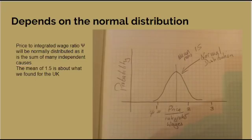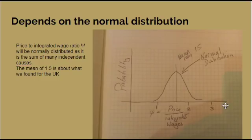They argue that in a chaotic system like the capitalist economy, the ratio of price to integrated wages will be normally distributed — it will fall on a bell curve. The diagram shows a mean of about 1.5, which is what we find empirically. They had suggested the mean would be 2. It would be 2 if, in Marx's terms, the rate of surplus value is 100%. If the rate of surplus value is 50%, you get a mean of 1.5.